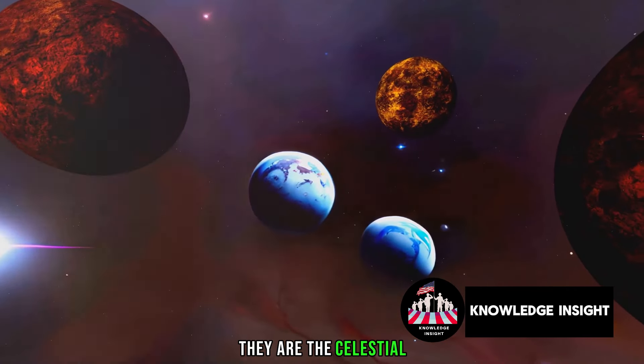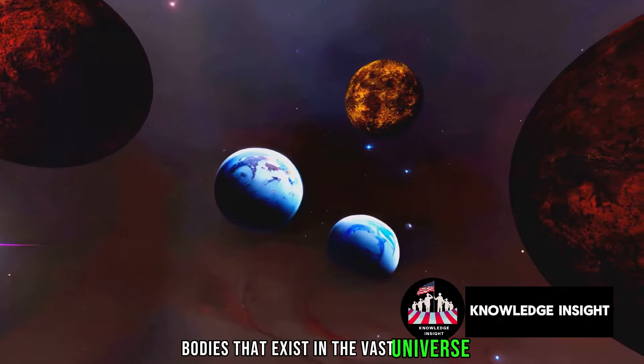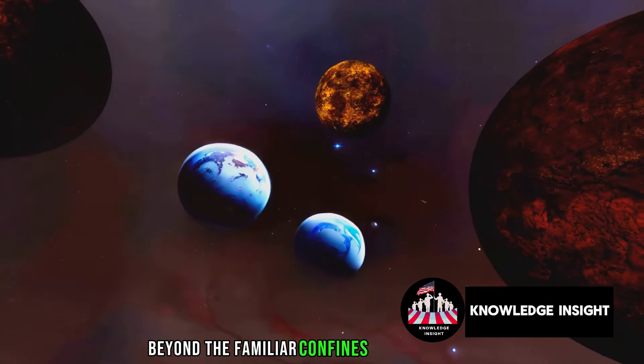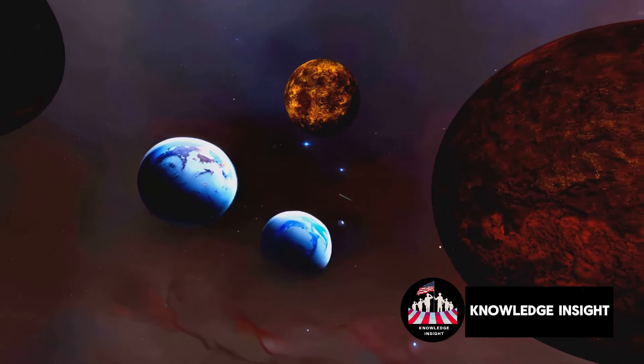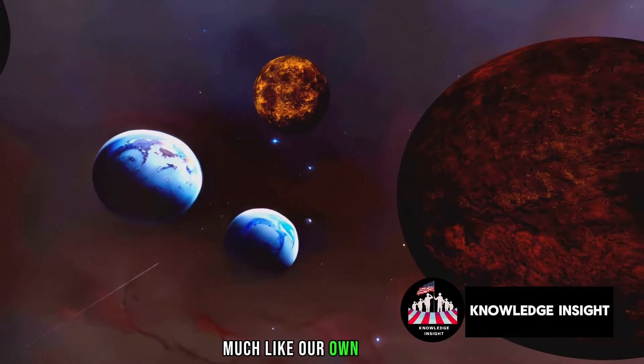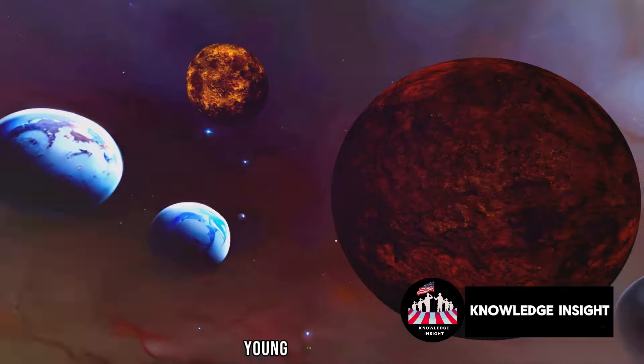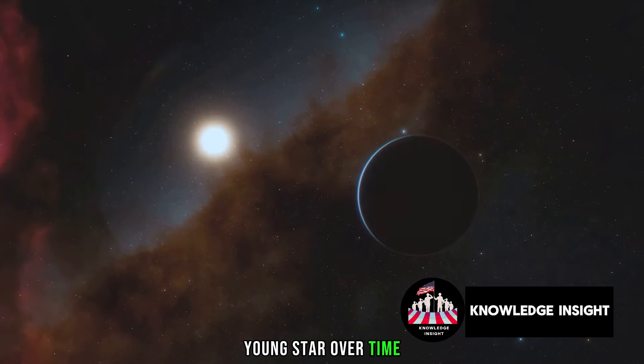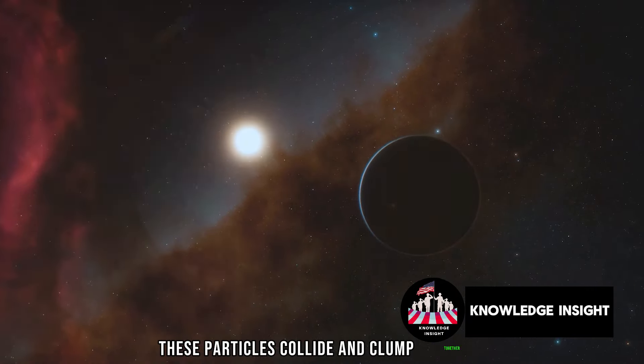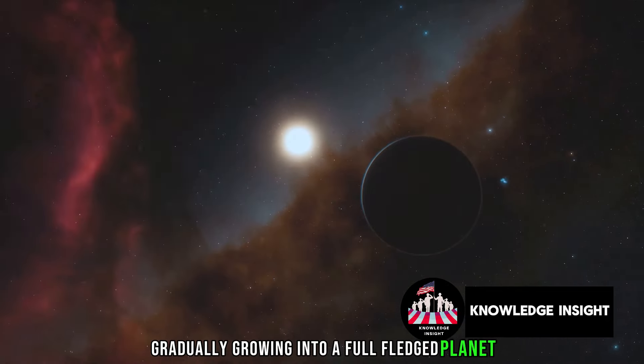That's right, they are the celestial bodies that exist in the vast universe beyond the familiar confines of our Milky Way. They are formed much like our own planets, from the swirling dust and gas that surround a young star. Over time, these particles collide and clump together, gradually growing into a full-fledged planet.